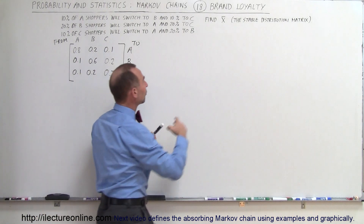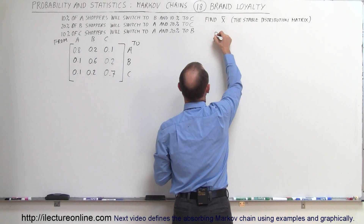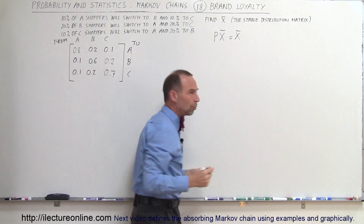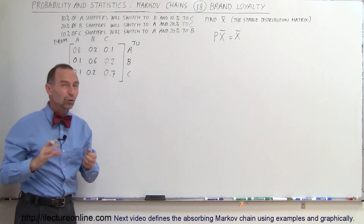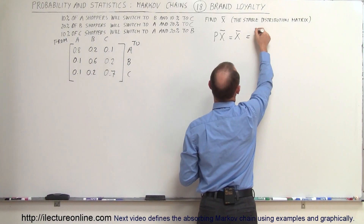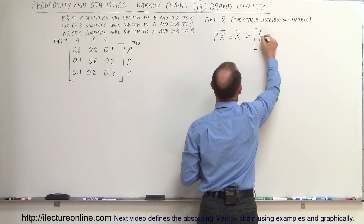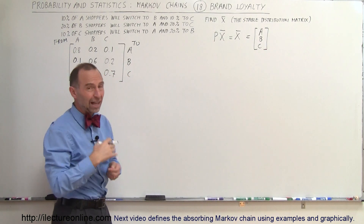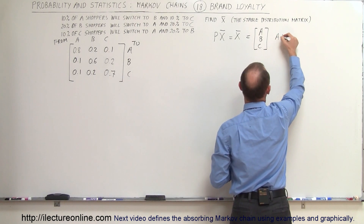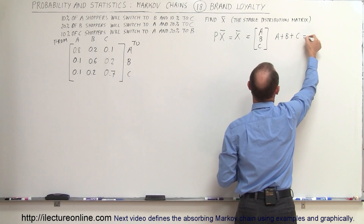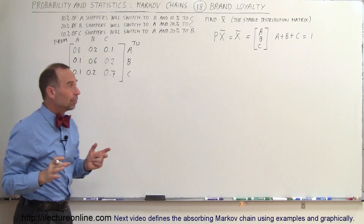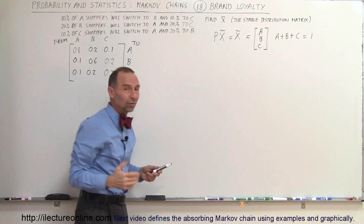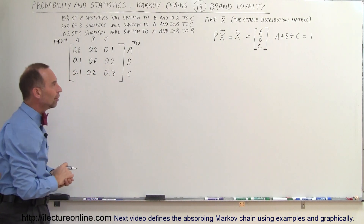To find the stable distribution matrix, we know that the transition matrix multiplied by the stable distribution matrix yields the stable distribution matrix. We let the stable distribution matrix equal [A, B, C] and we must find those values. Remember that A plus B plus C must equal 1. From the matrix product we'll get three equations with three unknowns to solve for A, B, and C.